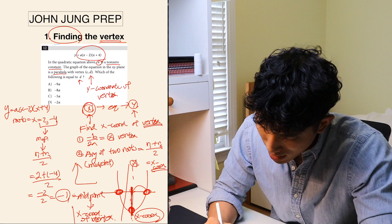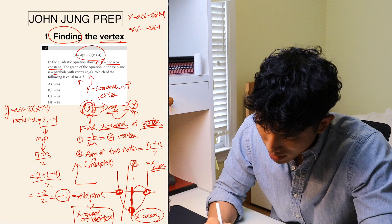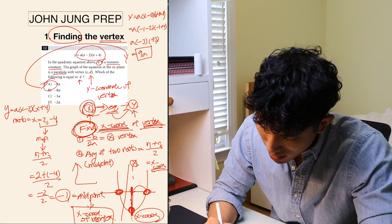Now we plug the x-coordinate of the vertex, which is −1, into the equation: y = a(−1 − 2)(−1 + 4) = a(−3)(3) = 9a. So 9a is the y-coordinate of the vertex, which means D = 9a. To summarize Type 1: find the x-coordinate of the vertex using either −b/2a or the average of the two roots, then plug it in to get the y-coordinate. Make sure you remember both methods.